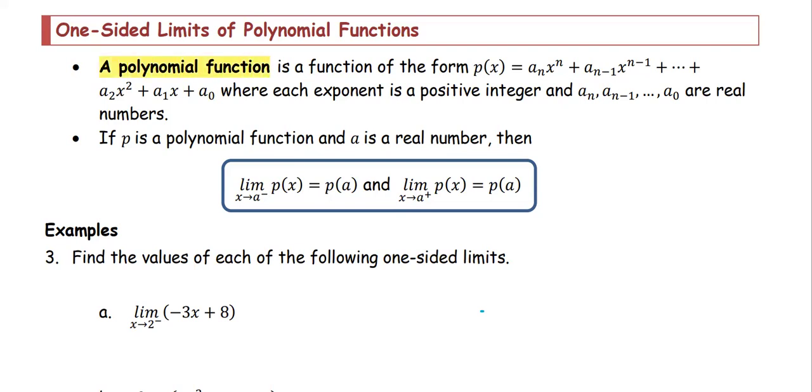A polynomial function is a function of the form p(x) equals an times x to the power n plus an minus 1 times x to the power n minus 1, plus similar terms with decreasing powers down to x to the second power, x to the first power, and the last term a0, which is just a single real number.